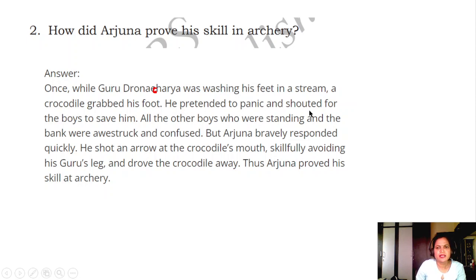He pretended to be panicked and shouted for the boys to save him. All the other boys who were standing at the back were awestruck and confused. But Arjuna bravely responded quickly. He shot an arrow at the crocodile's mouth, skillfully avoiding his guru's leg, and drove the crocodile away. Thus, Arjuna proved his skill at archery.